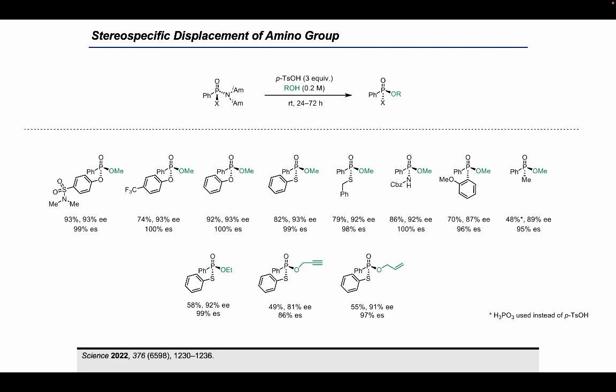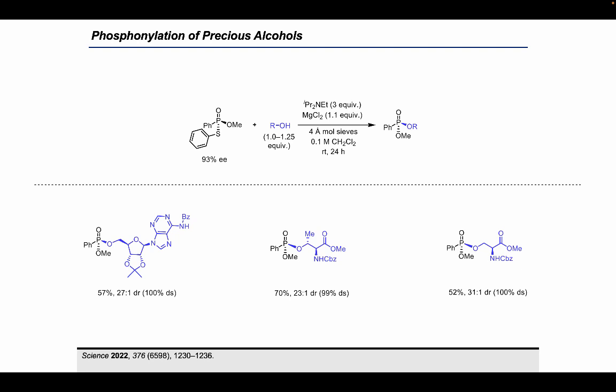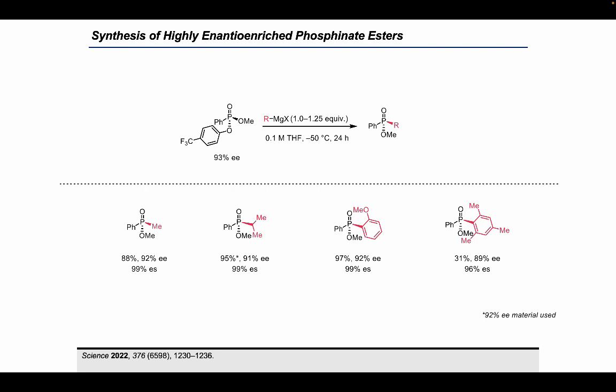We wanted to apply this method to the synthesis of stereogenic-at-phosphorus targets bearing more complex and valuable substituents. Given that thiols attached to phosphorus can be readily displaced by alkoxides, we hypothesized that a phosphonothioate intermediate could serve as a chiral building block for the phosphonylation of precious alcohols. Indeed, in the presence of magnesium chloride and Hünig's base, this phosphonothioate readily underwent reaction with little to no excess alcohol to form the corresponding phosphonylated molecules with complete stereospecificity, affording phosphonylated adenosine and amino acids with very high levels of dr. We also found that a phosphonate product bearing an electron-deficient aryloxy group readily underwent reaction with little to no excess Grignard reagent, including sterically hindered Grignards.